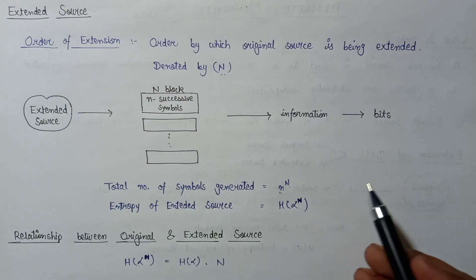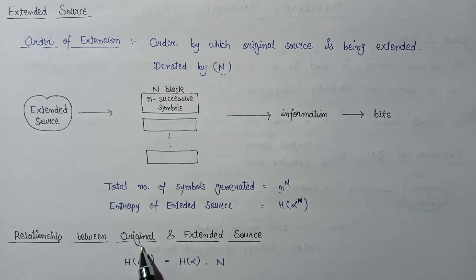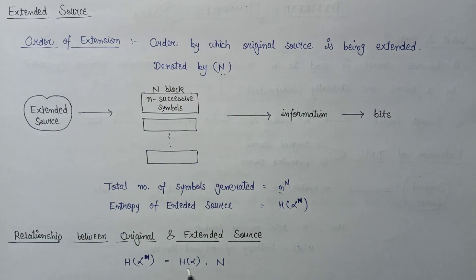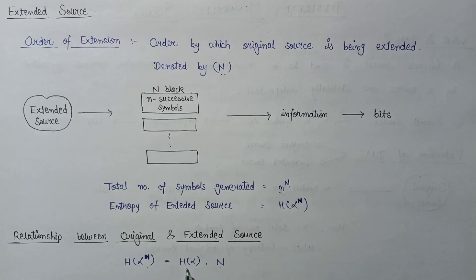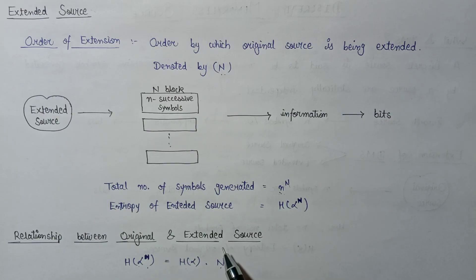Now let's discuss the relationship between the original source and the extended source. The entropy of the extended source H(α^N) is exactly equal to the product of the order of extension N and the entropy of the original source H(α). This is a very important relationship and will be used in the calculation of entropy for both the original and extended source.